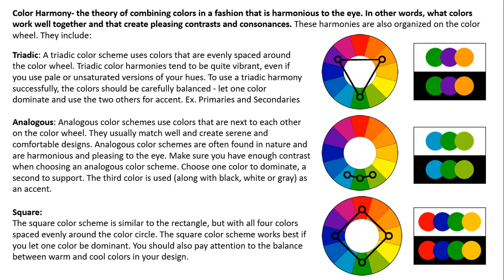Triadic is the first harmony — a color scheme that involves a triangle. You have three equally spaced colors on the color wheel that form a triangle. These harmonies are very vibrant, even if you're using more unsaturated versions of these colors — like adding some white or gray — they're still going to be pretty attention-getting. Examples of a triadic harmony would be a primary color scheme — red, yellow, and blue — since they are equally spaced on the wheel. The secondary colors are also triadic.